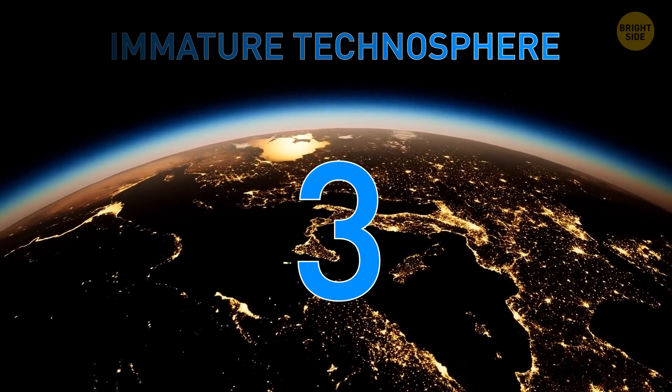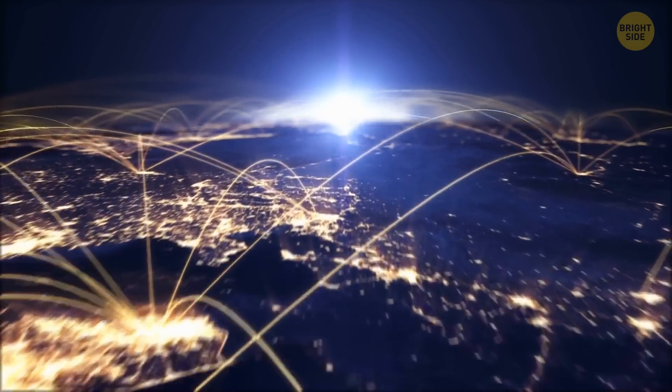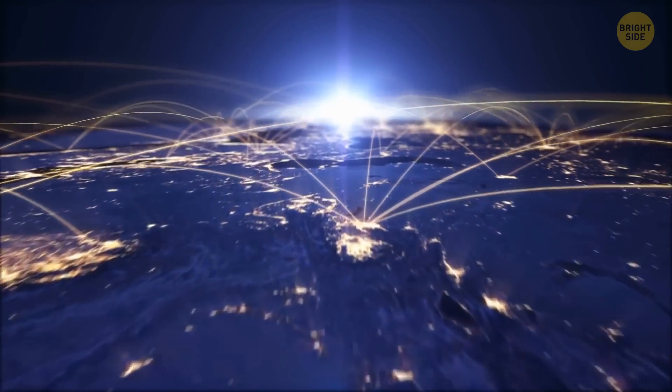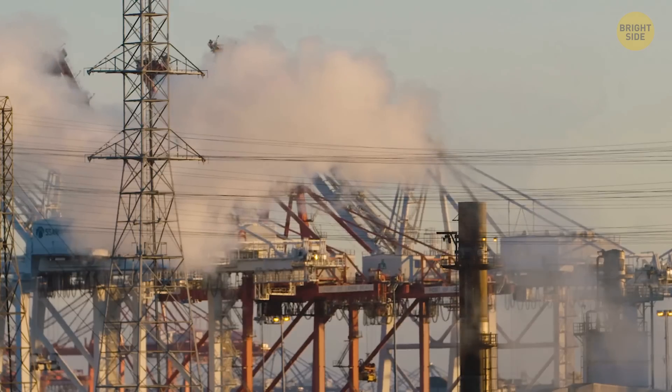The third stage, known as immature technosphere, is where we are now, with interlinked systems of communication, technology, transportation, electricity, and computers that draw resources from Earth's systems and affect the biosphere.